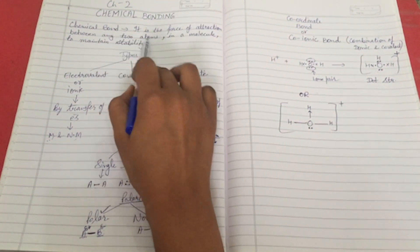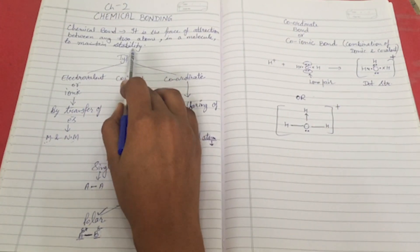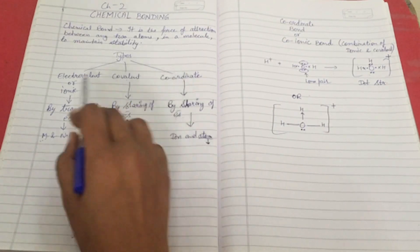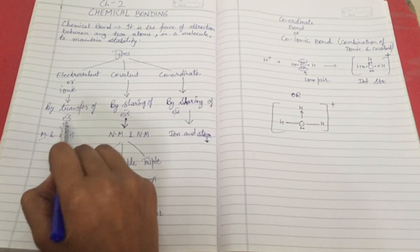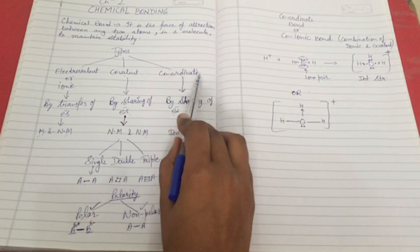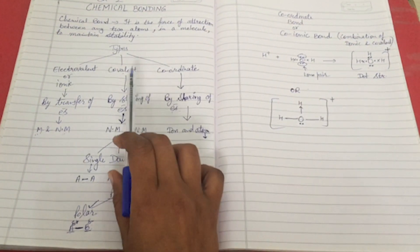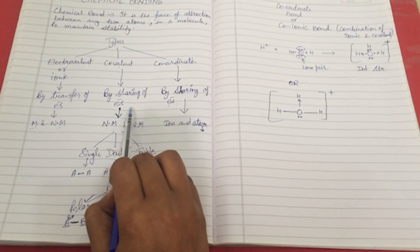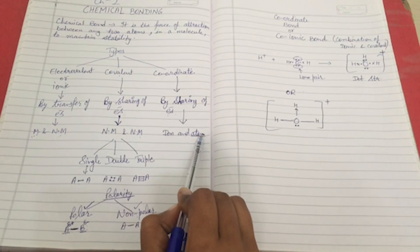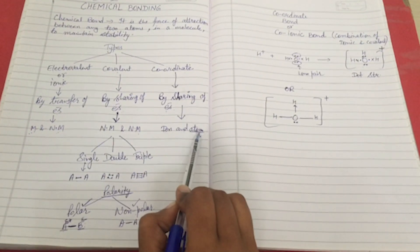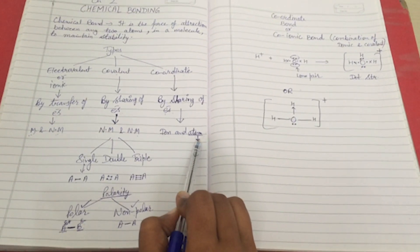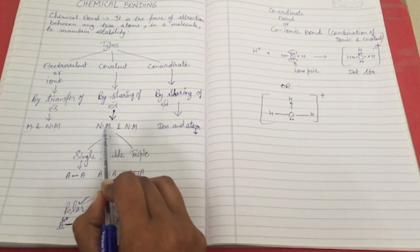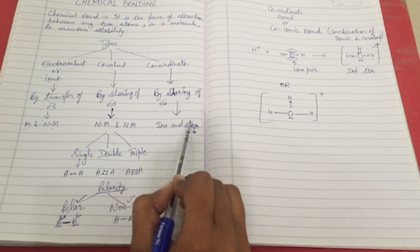Chemical bond is the force of attraction between any two atoms in a molecule to maintain stability. There are three kinds: electrovalent or ionic, covalent, and coordinate. Electrovalent bond is formed by the transfer of electrons. Covalent bond is formed by the sharing of electrons. Coordinate bond is also formed by sharing, but only one atom gives both electrons. Electrovalent bond is formed between metal and non-metal; covalent between non-metal and non-metal; and coordinate between an ion and an atom belonging to a covalent molecule.